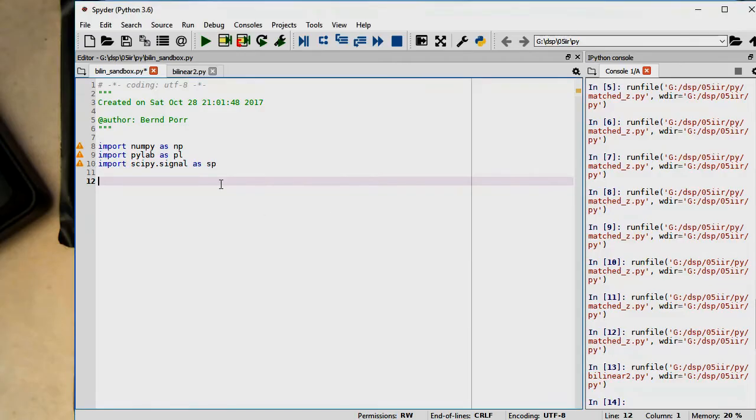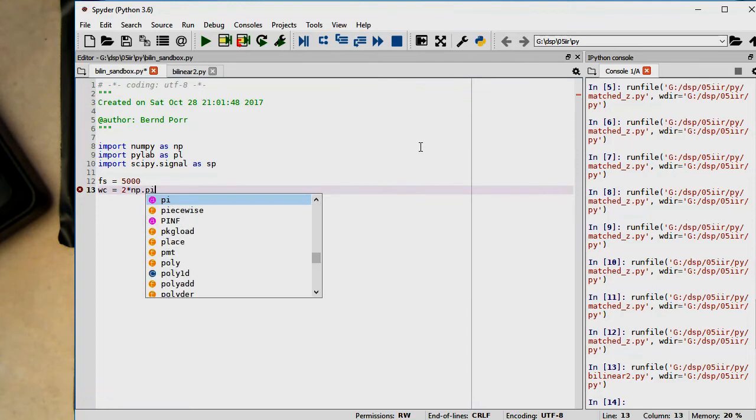So now let's create our filter here. That's very easy. So let's first define the sampling rate, let's say just 5 kilohertz. We would like to have a cutoff ring frequency omega, omega c of 2 NumPy pi and 1000, so 1000 Hertz.